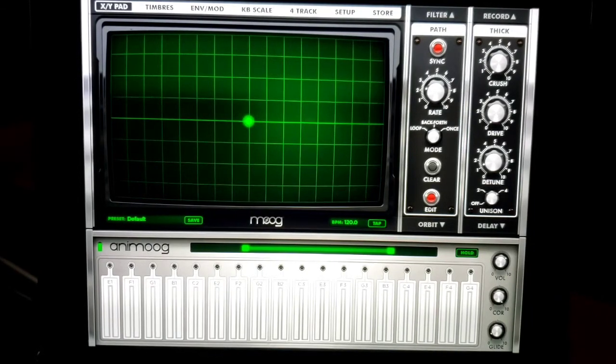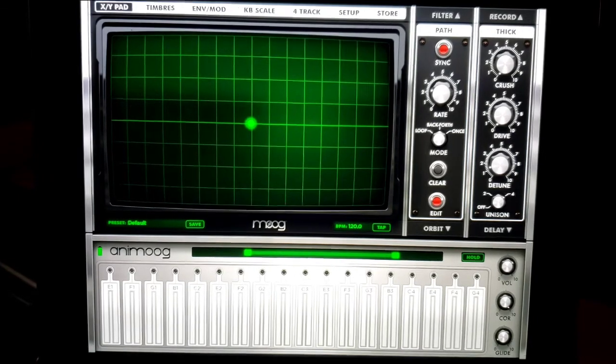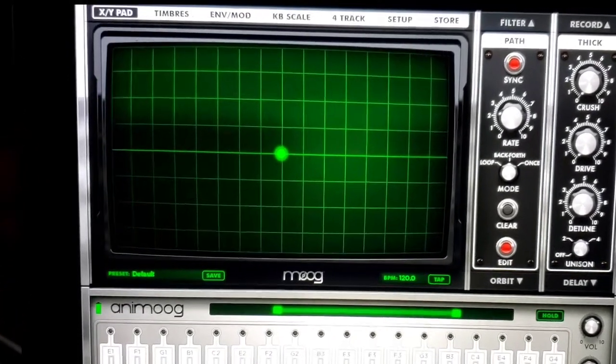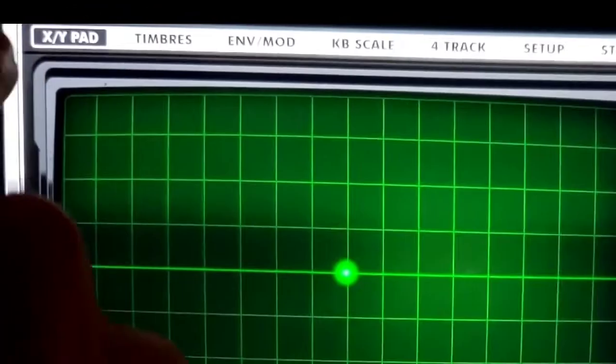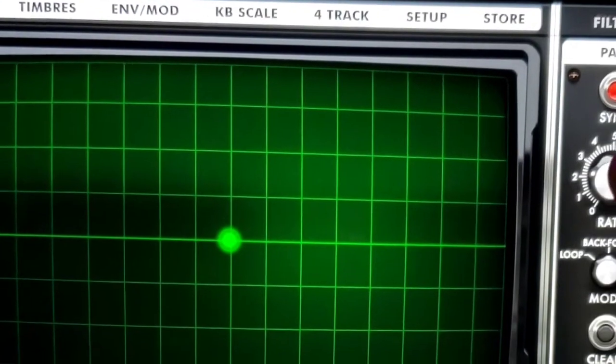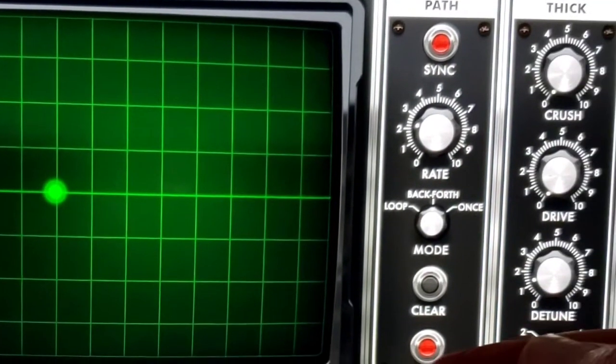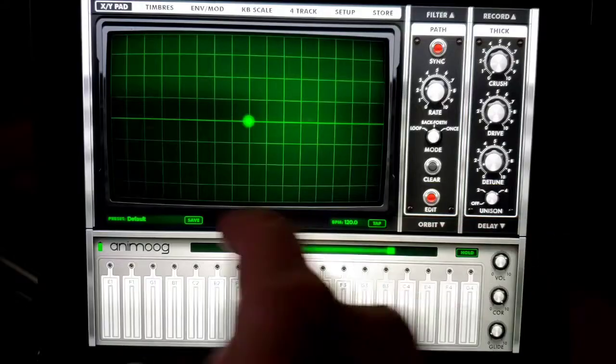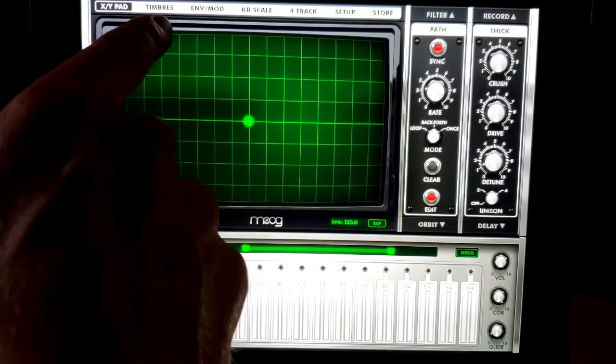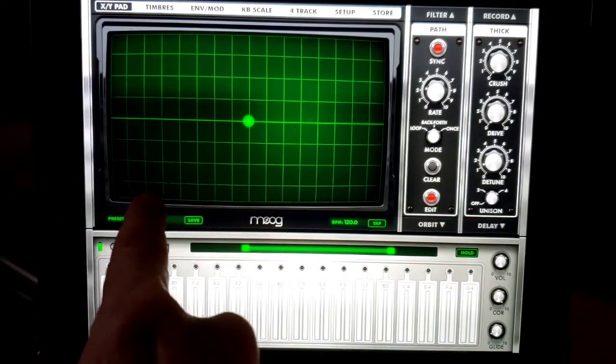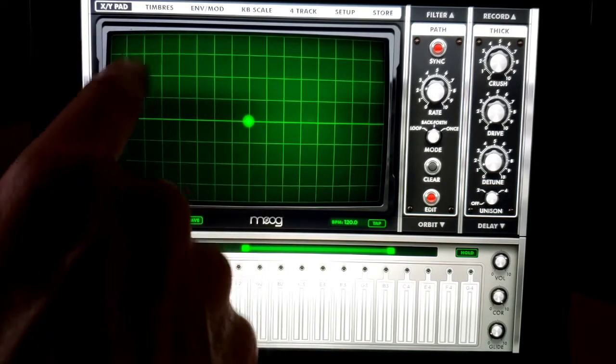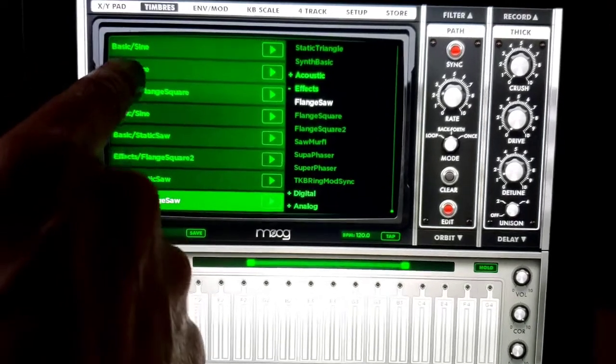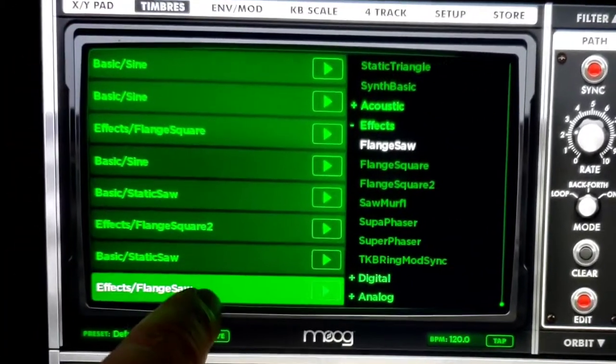Okay, I'm going to talk about some really basic functions on the Animoog synthesizer for iPad. I'll talk about specifically timbres and the relationship to the XY pad, and also path and orbit. The first thing I want you to notice is that there are eight rows of boxes on this XY pad screen, and they correspond with eight different timbres on this screen.